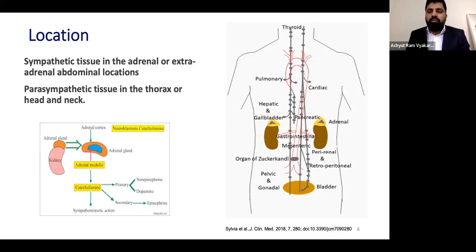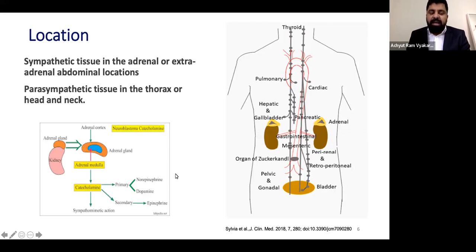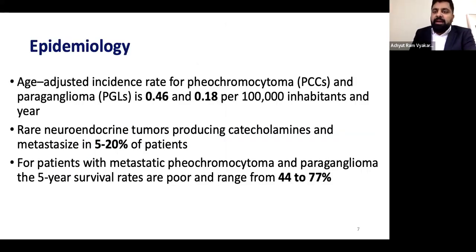To briefly overview what pheochromocytoma and paraganglioma are: sympathetic tissue is present in most of our organs. The primary location of the sympathetic tissue is the adrenal medulla. Sympathetic nerves are also present all over the body. Pheochromocytoma and paraganglioma are rare neuroendocrine tumors which metastasize in 5 to 20% of patients. They produce catecholamines, and the five-year survival rates are poor.